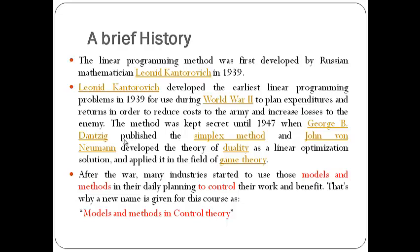A brief history. Linear programming was first developed by a Russian mathematician, Leonid Kantorovich, in 1939. He developed the earliest linear programming problems to plan expenditures and returns during World War II, to reduce costs to the army and increase losses to the enemy. The method was kept secret until 1947, when George Dantzig published the simplex method and John von Neumann developed the theory of duality. After the war, many industries started to use these models and methods in daily planning, which is why this course is called Models and Methods in Control Theory.